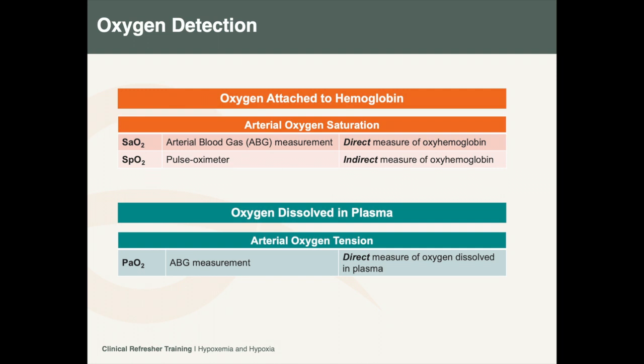After diffusing across the alveoli into the capillaries, a small portion of oxygen dissolves into the plasma. This creates an arterial oxygen tension, or PaO2, which is also measured using arterial blood gas analysis.